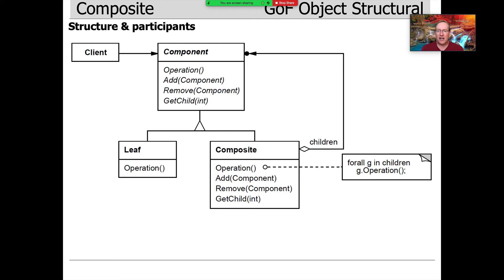Component is italicized, and operation, add, remove, getChild—those are all italicized as well. Then you can see through the magic of UML notation that leaf and composite inherit from component, and that's just the syntax,